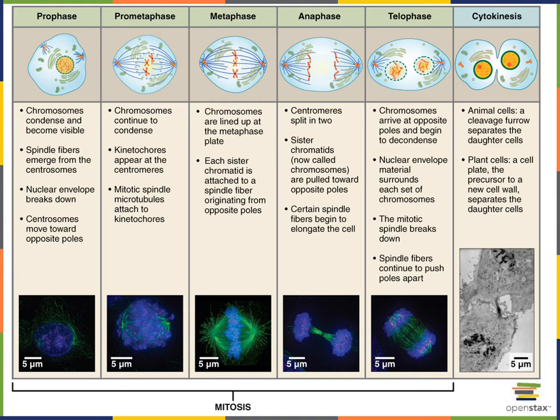The first step of mitosis is known as prophase. During prophase, the chromatin will condense to form chromosomes that are visible under the microscope.